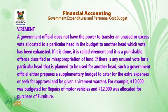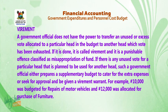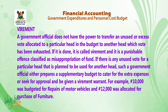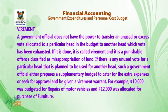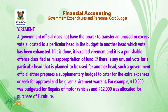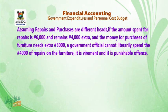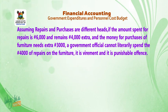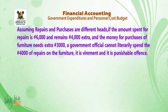Virement: A government official does not have the power to transfer an unused or excess vote allocated to a particular head in the budget to another head whose vote has been exhausted. If it is done, it is called Virement and it is a punishable offence classified as misappropriation of funds. If there is any unused vote for a particular head planned to be used for another head, the official must either prepare a supplementary budget or seek approval and be given a virement warrant. For example, if 10,000 Naira was budgeted for repairs of motor vehicles and repairs cost only 6,000 Naira, leaving 4,000 Naira, and furniture purchase needs an extra 3,000 Naira, the official cannot spend the 4,000 Naira of repairs on furniture — it is a virement and a punishable offence.